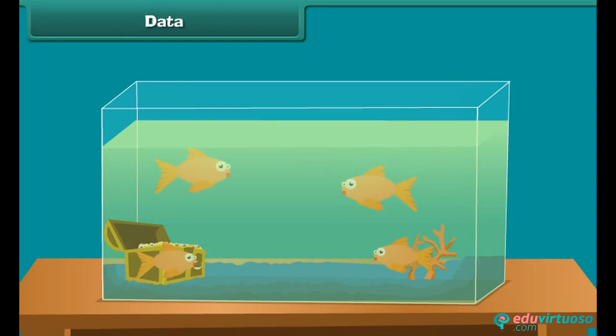Now let us find the data count of orange fishes in a tank. How many are there? 1, 2, 3, 4. 4 fishes. Hence, the data is 4. Number of orange fishes is 4.